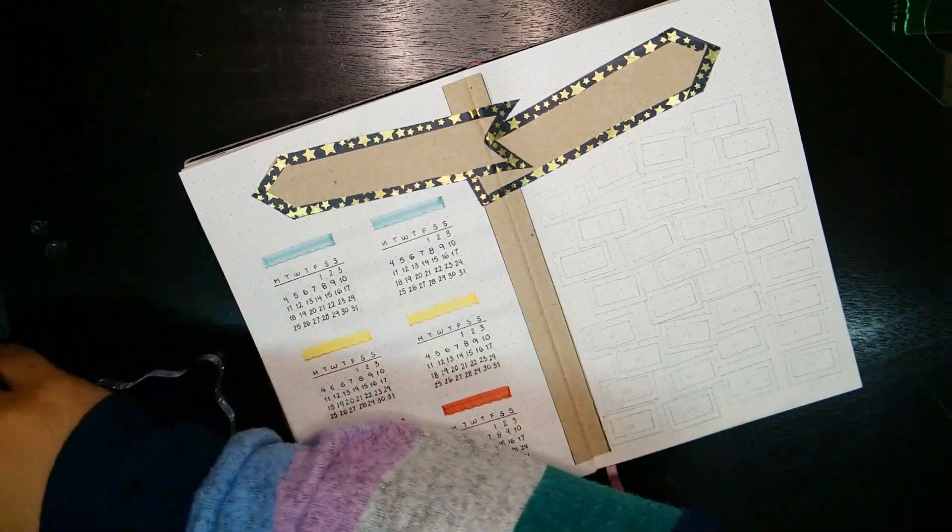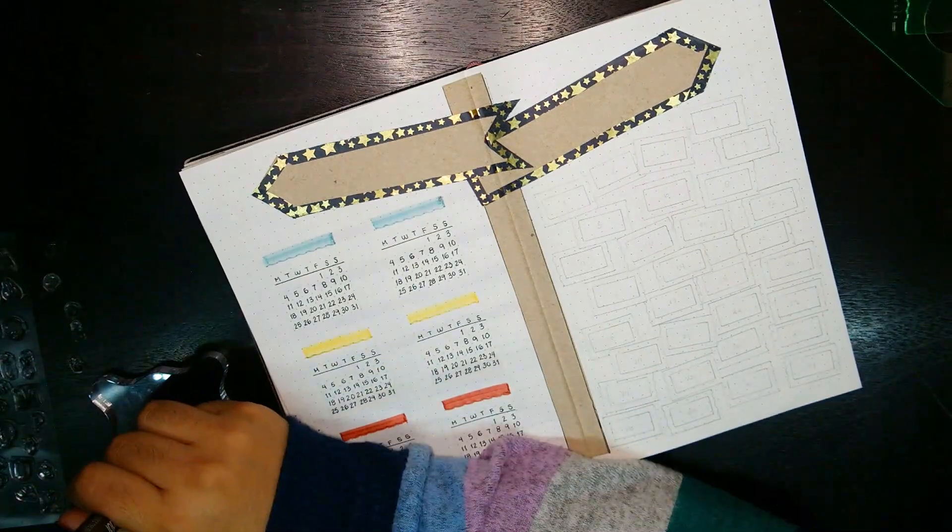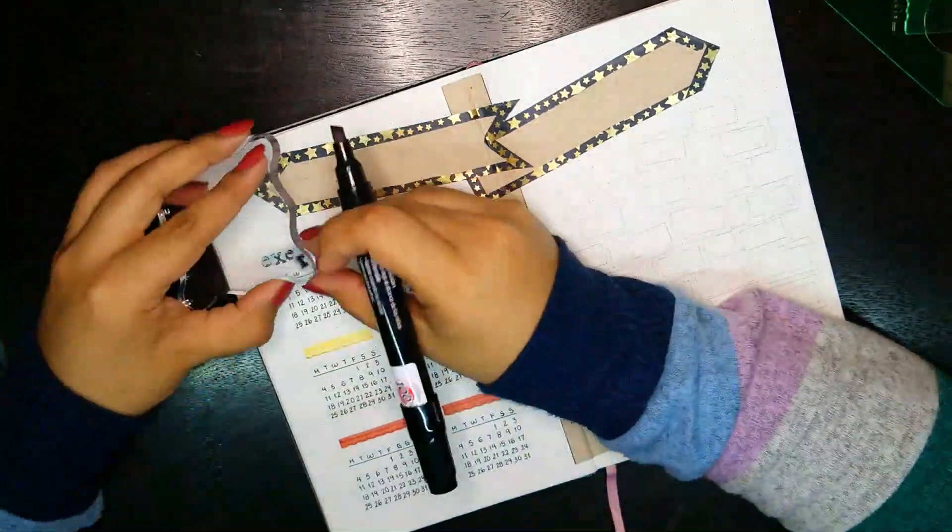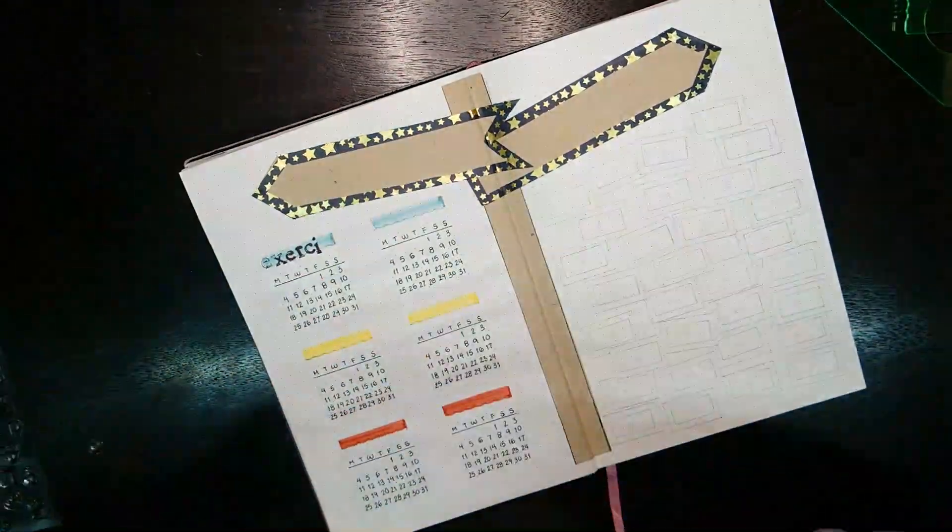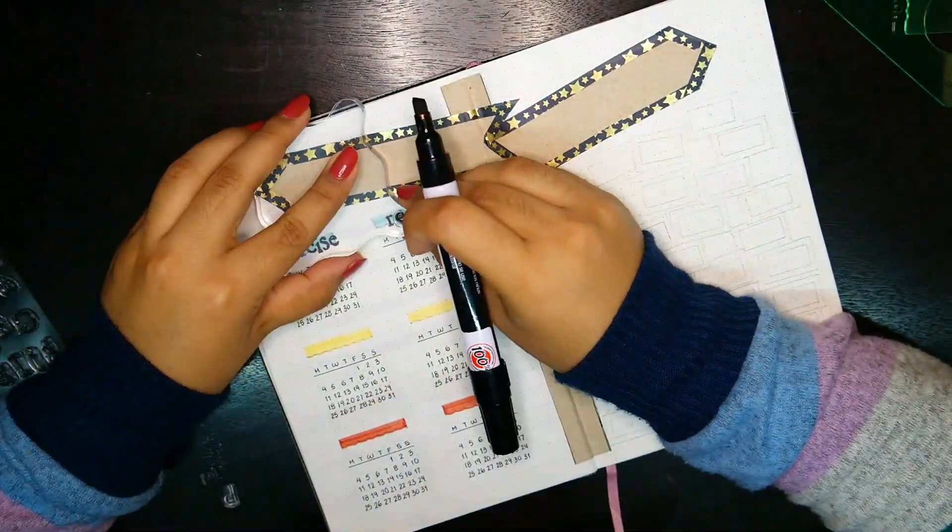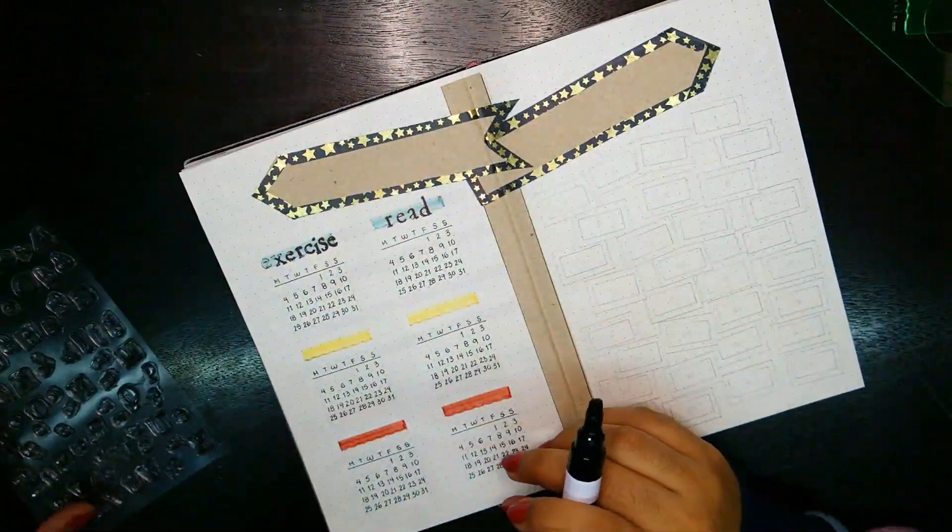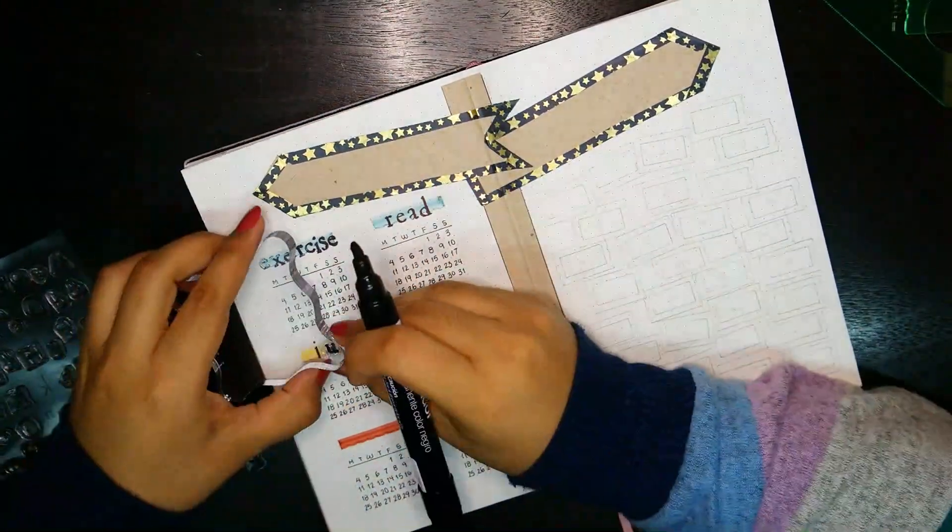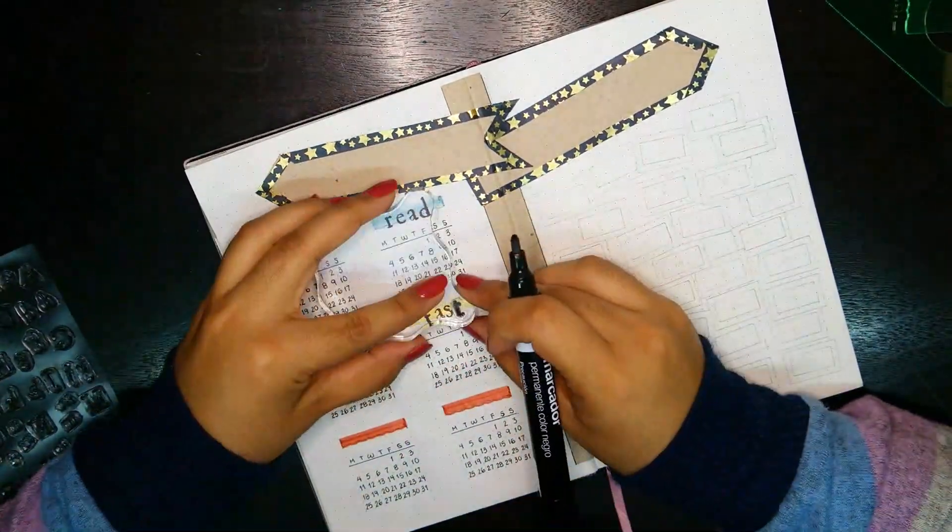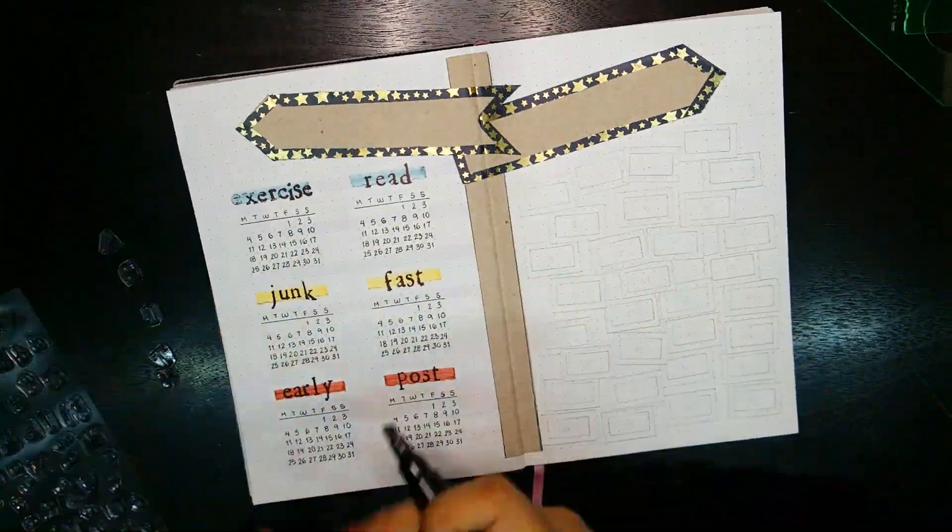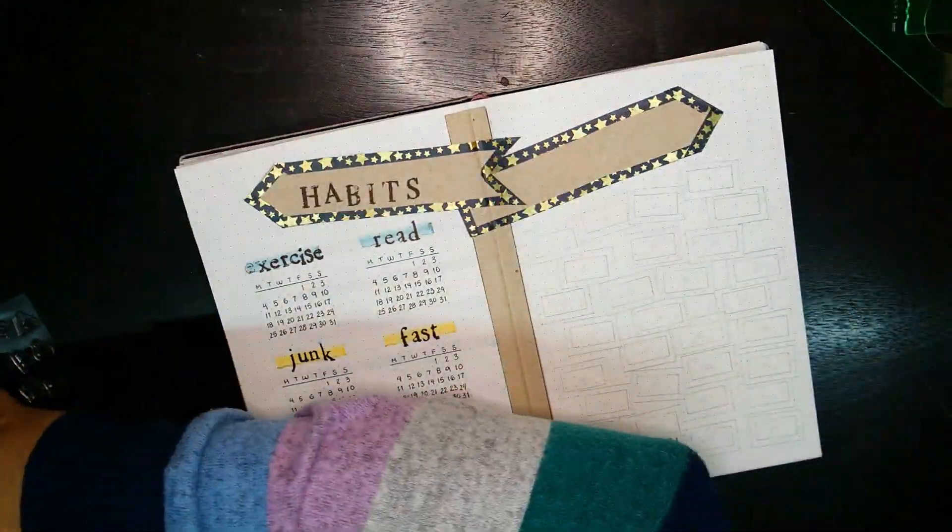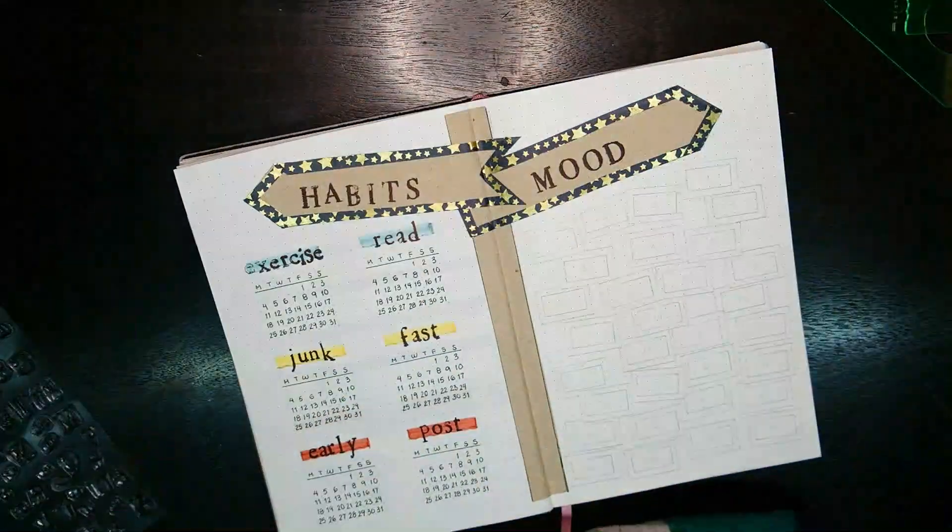I use the lowercase stamps to stamp each title of my six trackers, and since these stamps are kind of bigger, I only use one word that represents that habit well enough. This month I'm tracking every day that I exercise and read, as well as every day of no junk and no fast food, and waking up early and posting on Instagram. I'm really bad at the last one, so I'm just trying to hold myself more accountable by adding this new section. Lastly, I use the uppercase stamps for the titles.